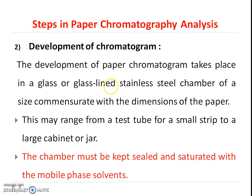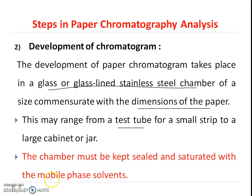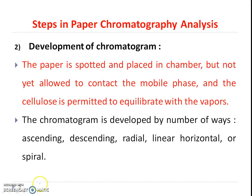The second step is development of chromatogram. The development takes place in a glass or glass-lined stainless steel chamber, the size depending upon the dimension of the paper, ranging from a test tube to a large cabinet jar. The chamber must be kept sealed and saturated with the mobile phase solvents. As seen in the previous video, the mobile phase is more polar compared to the stationary phase, using combinations of alcohols and water. A significant amount of time is required for the saturation of the mobile phase into the chamber.